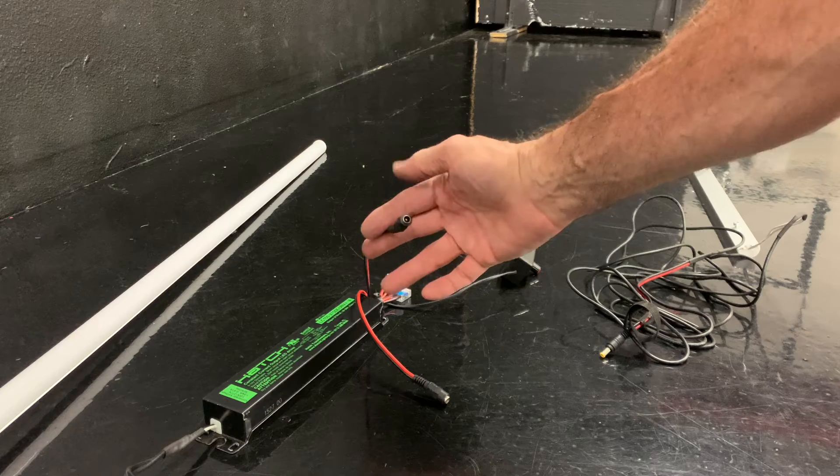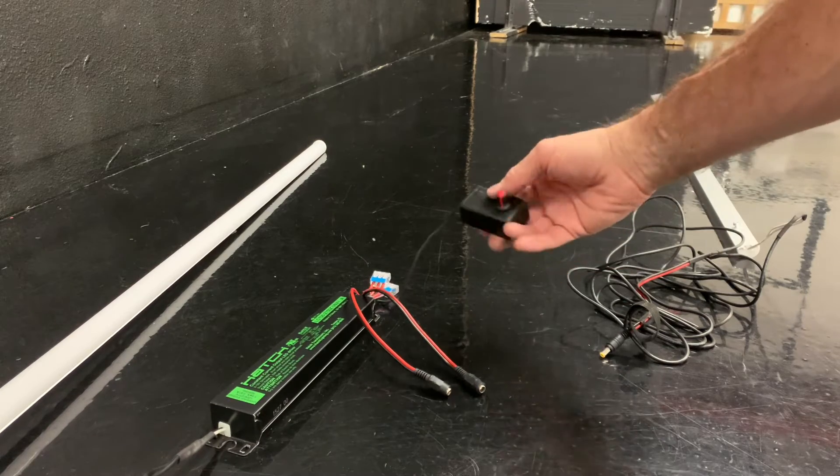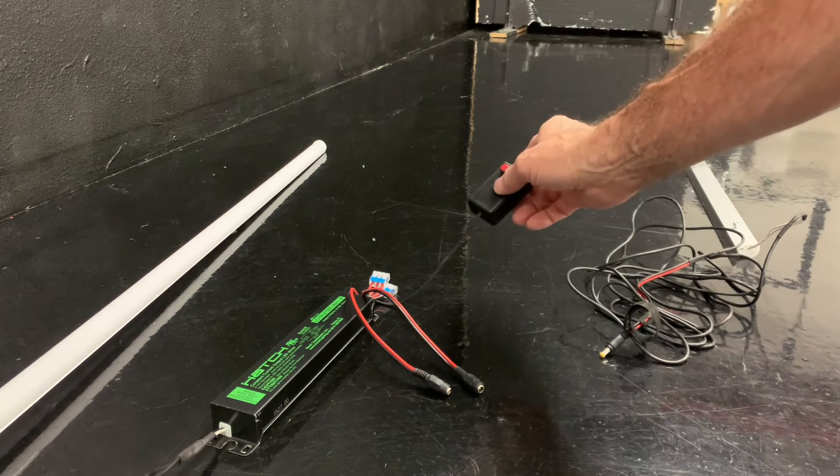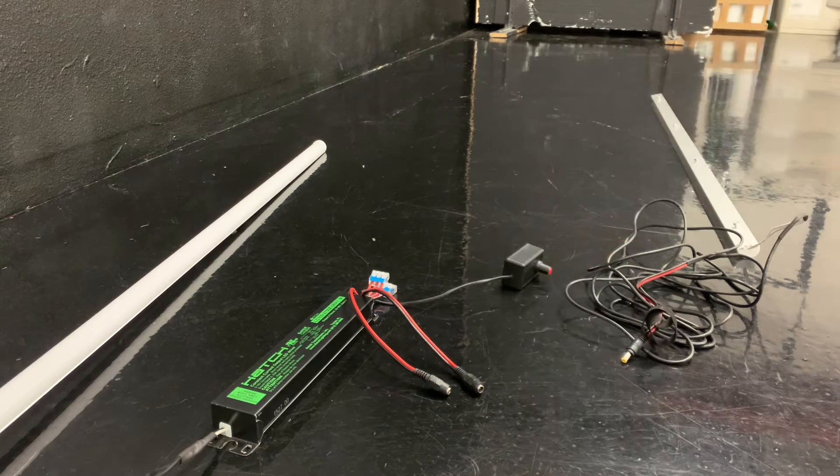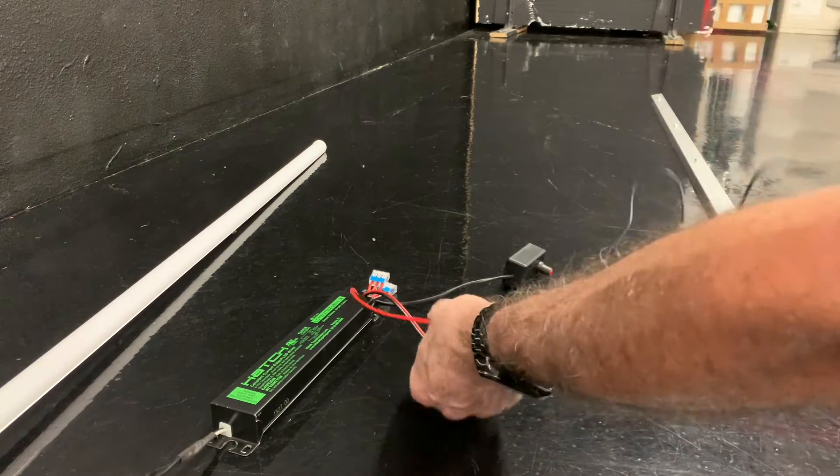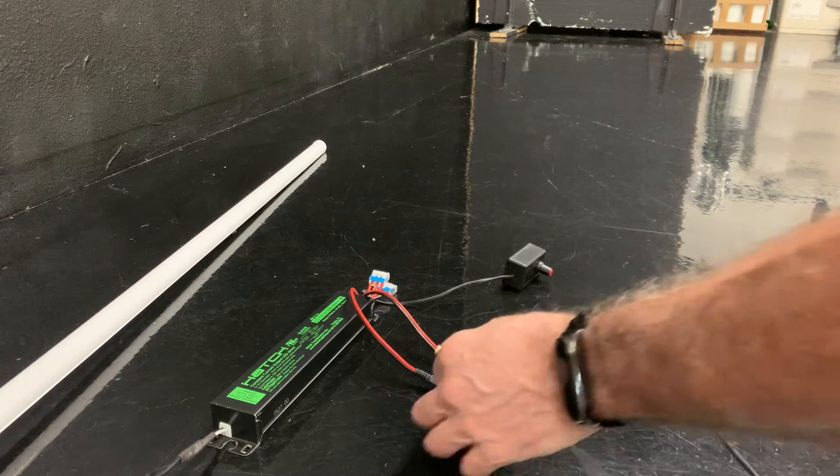One for each light strip. There is a dimmer control, it says dimmer on it so you'll know. There's actually no on-off switch, but you can brighten and dim the light accordingly. So each light plugs in via this connector.